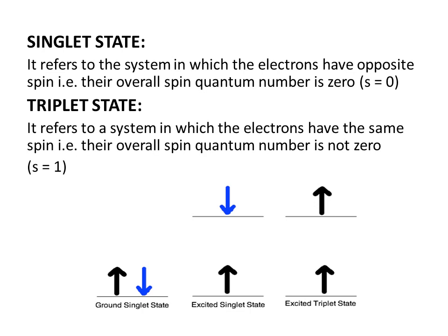Looking at the figure, the pair of electrons with opposite spin is in the singlet state. Since they are in the ground state, this is called the ground singlet state. When these are irradiated by some radiation and one electron gets excited to a higher level, and its spin remains opposite to that of the electron in the ground state, this is referred to as the singlet excited state.